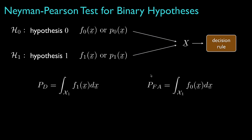Based on that region, we can define the detection probability as the probability that data from hypothesis 1 are in the region, and the false alarm probability as the probability that data from hypothesis 0 are in that region. Ideally, we'd like for the detection probability to be large and the false alarm probability to be small.